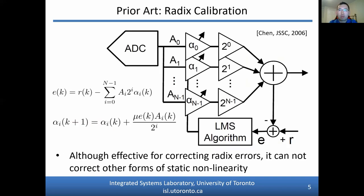Here I show some prior work: the radix calibration technique. Radix calibration is an example of an all-digital calibration technique that has been used in pipeline ADCs and in SAR ADCs. This foreground calibration technique alters the ideal radix-2 weighting by applying an adaptive coefficient alpha_i to each binary output of the ADC. These alpha coefficients can be found using a least mean square algorithm that minimizes the error between the ADC output and an ideal known reference. This reference can be a ramp signal, sinusoidal signal, or any other signal with the characteristics necessary to quantify the nonlinearities within the ADC. Although effective for correcting radix errors, radix calibration cannot correct other forms of static nonlinearity.